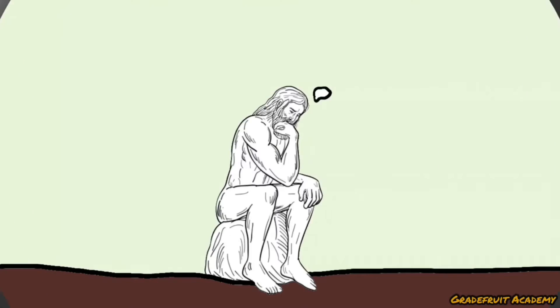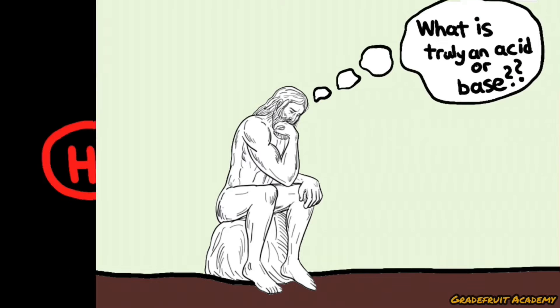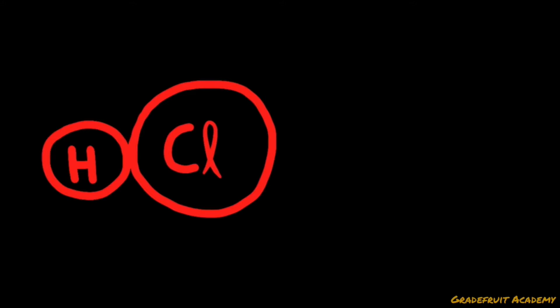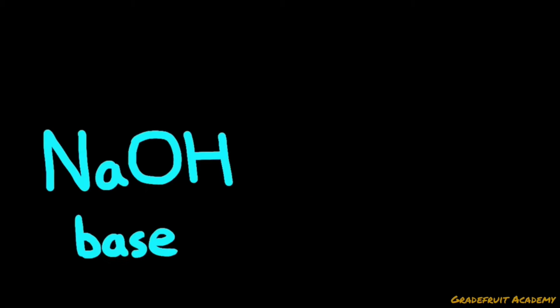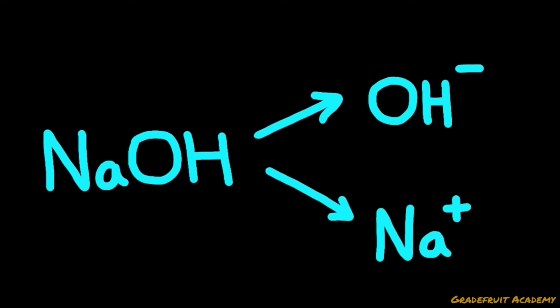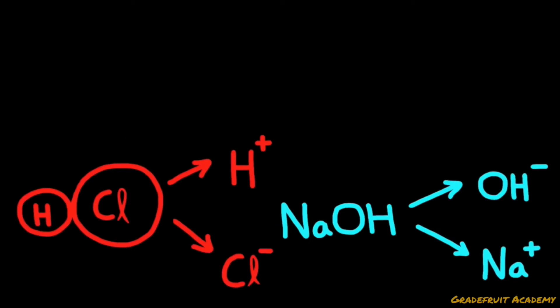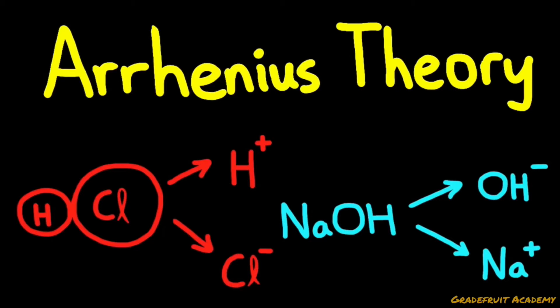But not to worry because we will first learn about how people in the past came up with three theories to define what is truly an acid or a base. We may think that an acid is something that just produces hydrogen ions while a base is something that just produces hydroxide ions when both are dissolved in water. This is also known as the Arrhenius theory or definition of acids and bases.